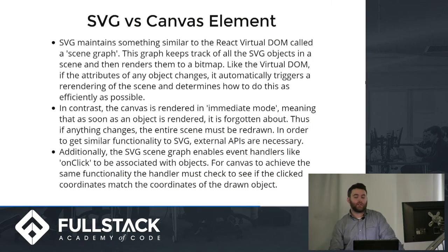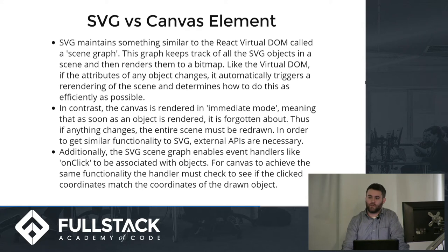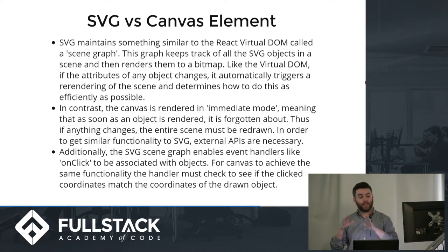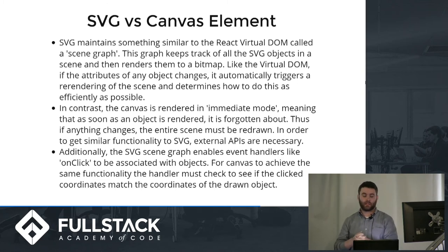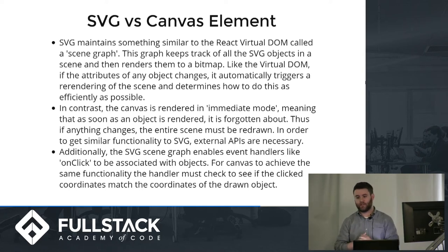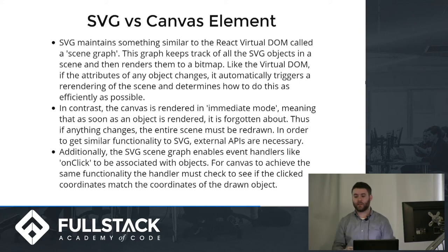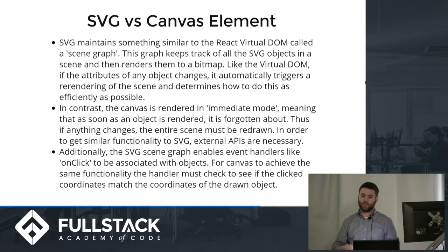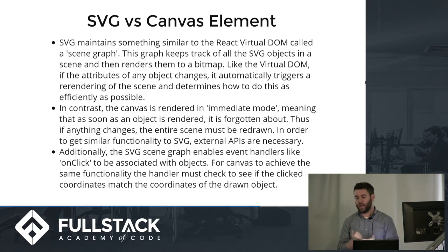Some key differences between SVG and the canvas element: SVG maintains something very similar to the React virtual DOM called a scene graph. This graph tracks all objects rendered in the scene, renders them to a bitmap, and automatically triggers re-rendering when attributes change — determining how to do so as efficiently as possible. In contrast, canvas is rendered in immediate mode, meaning that as soon as an object is rendered the canvas knows nothing about it. If anything changes, the entire scene needs to be re-rendered, and you need an external scene graph-like API to get similar functionality.